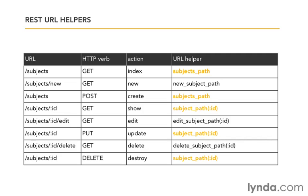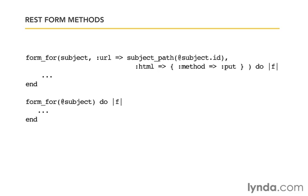For forms, they use HTTP POST by default, so we need to tell update and destroy forms to use PUT and DELETE instead. You tell the form that the HTML method should be PUT or DELETE. Rails also gives a shortcut: just pass in the object. If it's an unsaved object, Rails creates a form to POST to subjects_path. If it's an already saved object, Rails creates a form to PUT to subject_path with the object's ID. For DELETE, you'll need to write it out the long way. Note that HTML4 and XHTML don't support PUT and DELETE, so Rails fakes it with a POST form plus a hidden field indicating the intended method.